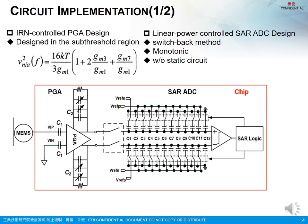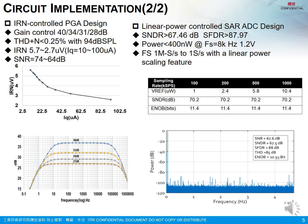The PGA is designed in the subthreshold region, and the current can be adjusted. The SAR ADC is used with a switching and monotonic design without any static circuits to reduce power consumption. Input-referred noise control: the PGA can be set to a programmable gain for specific demands of the microphone. Total harmonic distortion is measured lower than 0.25% with 94dB SPL.